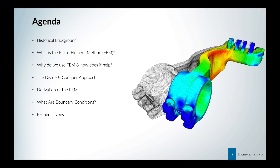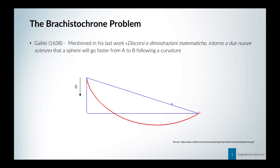Basically, it all began with the so-called Brachistochrone problem with Galilei in 1638, and he mentioned in his last work that a sphere will go faster from A to B following a curvature which is under the effect of gravity. Then Bernoulli came in 1696, who was one of the fathers of variational calculus, and he presented this problem in his 15th version in Leipzig, in the so-called Acta Eruditorum. This was one of the first scientific journals ever, and he tackled this problem because he was in competition with his brother Jacob.